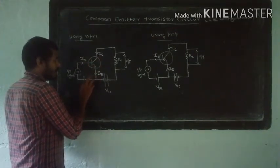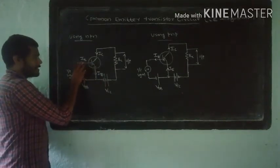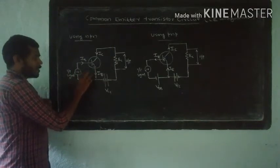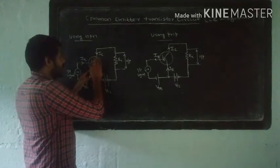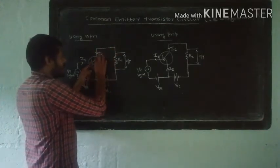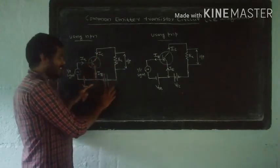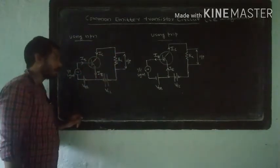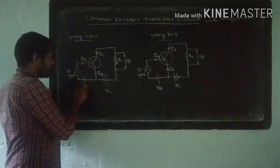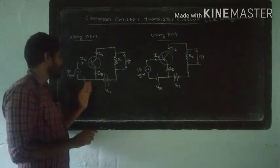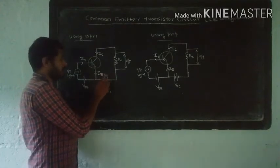For the NPN transistor, n is negative, p (base) is positive. The collector side n is negative. You connect battery VCC positive to get reverse bias. So the base-emitter junction is forward biased by VBB and the base-collector junction is reverse biased by VCC.